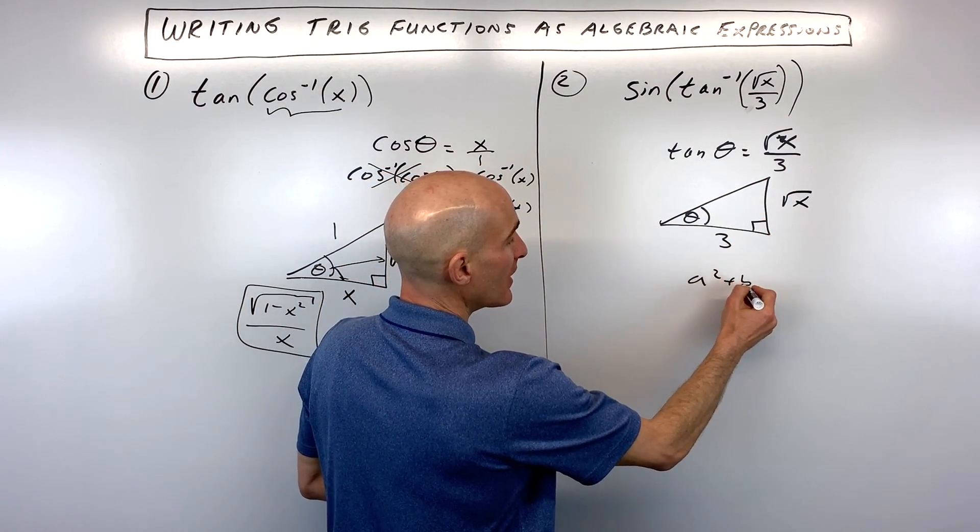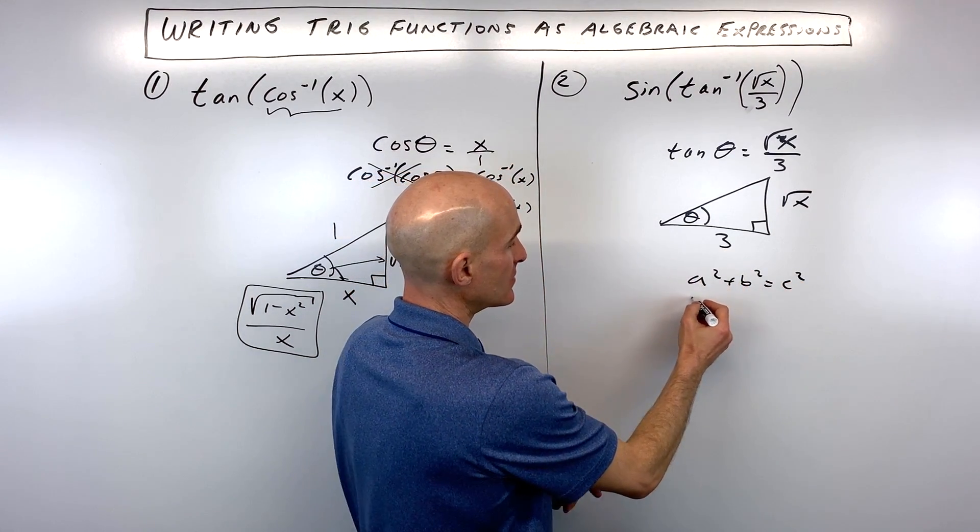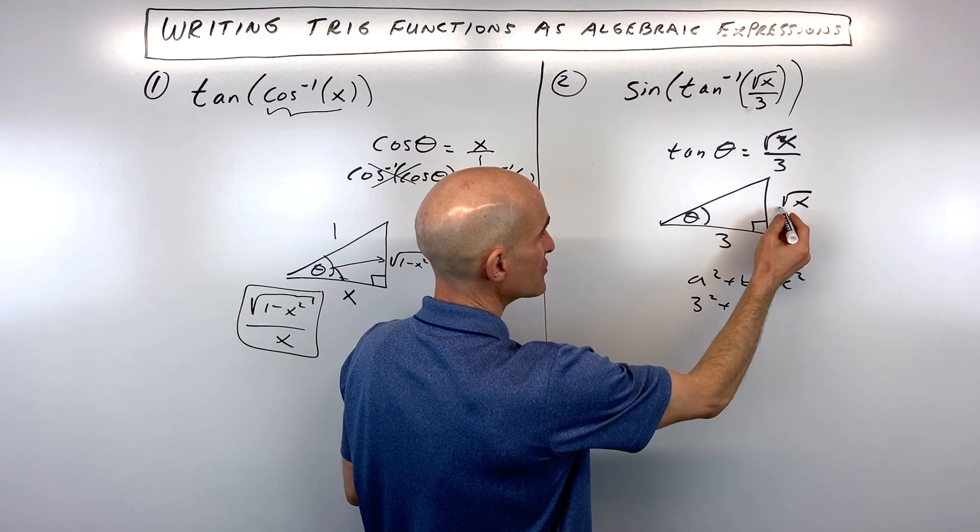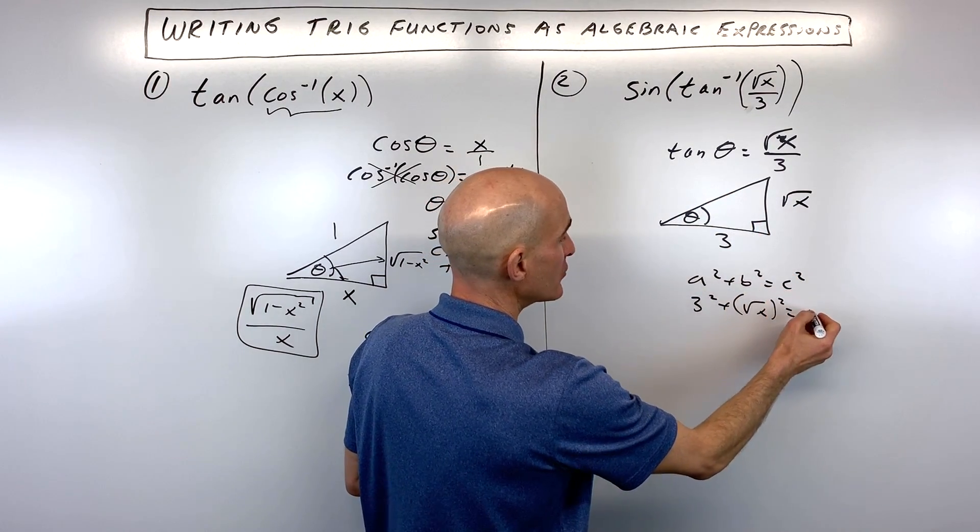Now we're going to do our Pythagorean theorem. A squared plus b squared equals c squared. A is three, so that's going to be three squared plus here's our side b squared of x squared equals our hypotenuse c squared.